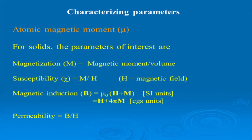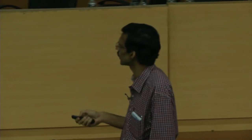Permeability is defined as B/H. A soft magnetic material should have very high permeability. It is worth noting that susceptibility is typically used to characterize paramagnets, whereas permeability is the relevant parameter for ferromagnets. Unfortunately, magnetism tends to use CGS units due to mathematical convenience rather than SI units.